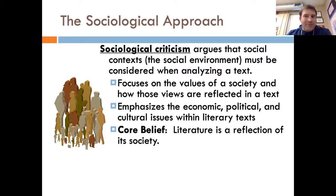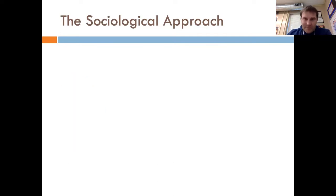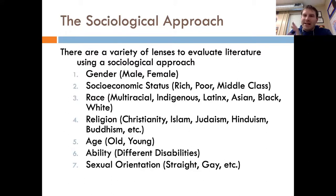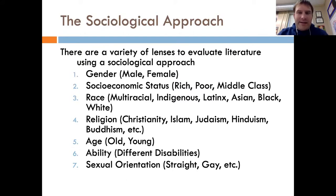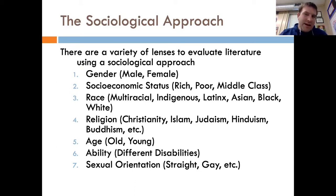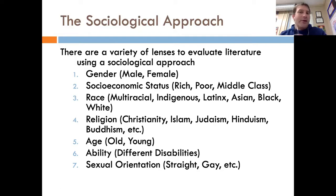As we read these books or any pieces of literature, we are seeing our society being reflected back at us. There are a variety of lenses you can use in a sociological approach. You take one of these lenses and place it on the text and see how it shapes it — and all of these apply. Even if something is not explicitly being talked about, the fact that it isn't being talked about is itself a way to think about the text. You can look at it through a gender lens — how does this text talk about men? How does this text talk about women? Are they presented in a good way or a bad way? What does it have to tell us about the way society treats men and women?